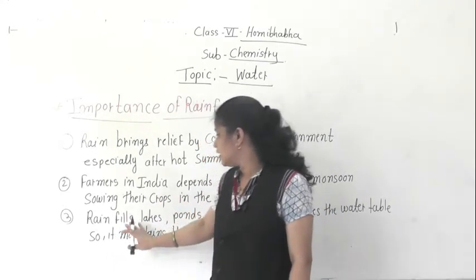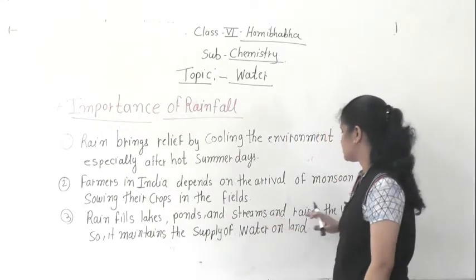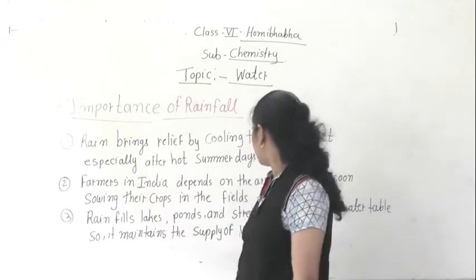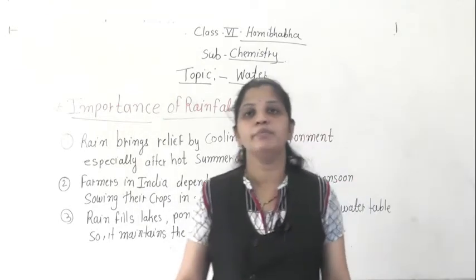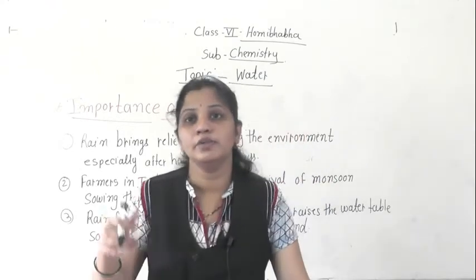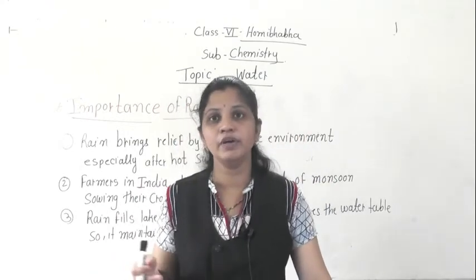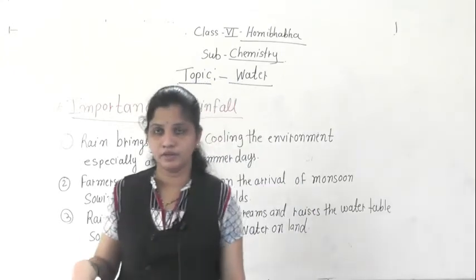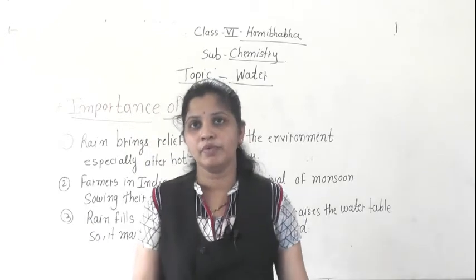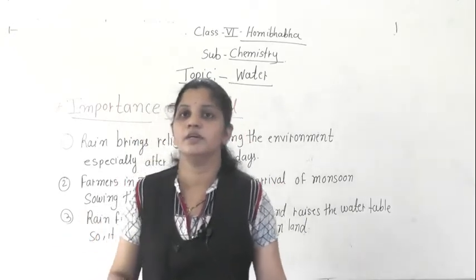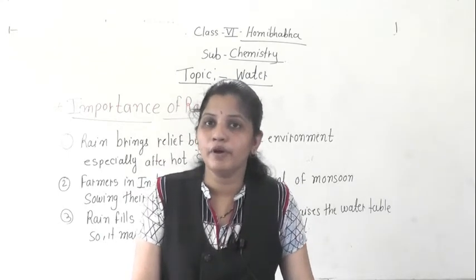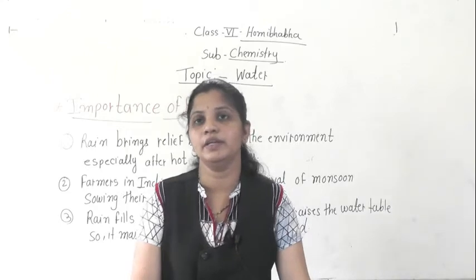The next point is that rain fills lakes, ponds, and streams, and raises the water table, so it maintains the supply of water on the land. Because of the rain, the rivers are totally full, then ponds fill up too. Water table means underground water — that underground water level also increases, because most of the water goes under the ground.